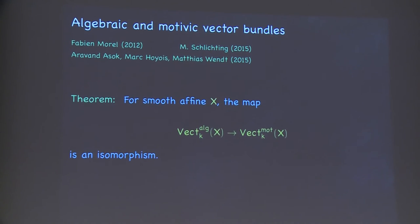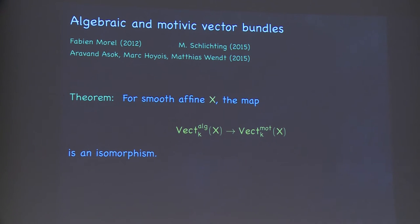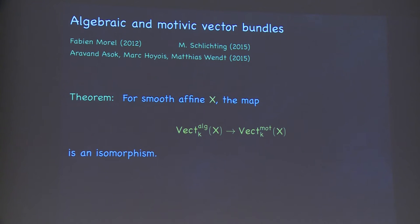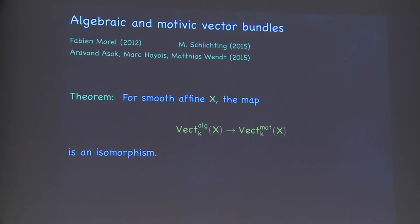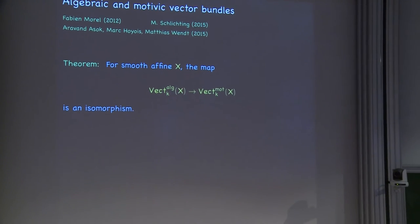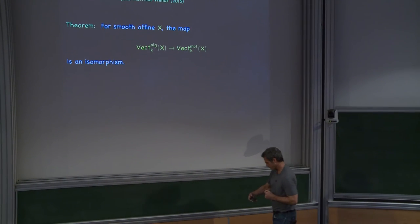There's a theorem of Morel. Morel published his theorem in 2012, but it goes back quite a bit before that. Then Marco Schlichting and later Arvind Asak, Marc Hoyois, and Matthias Wendt found a much simpler and more direct proof. The theorem says that for smooth affine varieties, the map from algebraic and motivic vector bundles are the same thing. You can think of that as a really definitive version of Lindel's theorem or even the Quillen theorem — Lindel's theorem saying that at least algebraic vector bundles is A1-invariant. This is an improvement of Lindel's theorem and in some sense the more definitive statement that you might wish for.